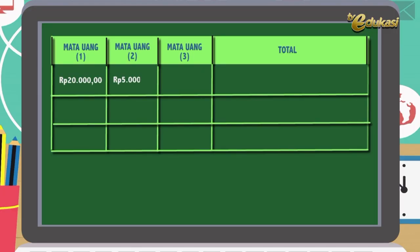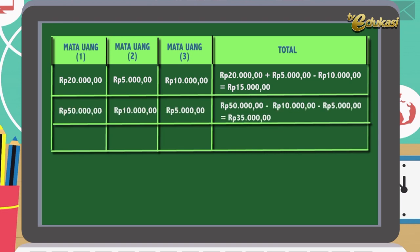Bapak akan menerangkan operasi hitung uang. Lihat tabel berikut. Di sini ada uang Rp20.000, Rp5.000, Rp10.000. Di sini ada operasi hitung Rp20.000 ditambah Rp5.000, dikurangi Rp10.000. Hasilnya Rp15.000. Di sini juga ada uang misalkan Rp50.000, Rp10.000, Rp5.000. Di sini ada operasi hitung Rp50.000, dikurangi Rp10.000, dikurangi Rp5.000, sama dengan Rp35.000.